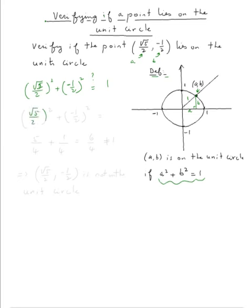So let's do it. Square root of five over two squared plus negative one over two squared. If we square root, square root of five squared will give us five, two squared will give us four, negative one squared will give us one, two squared will give us four, and this is six over four which is not equal one.